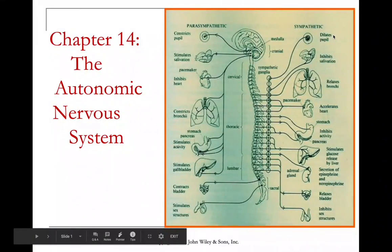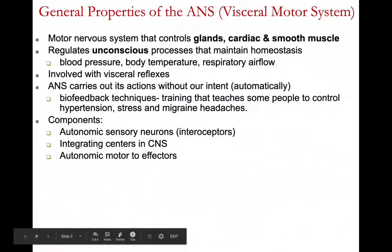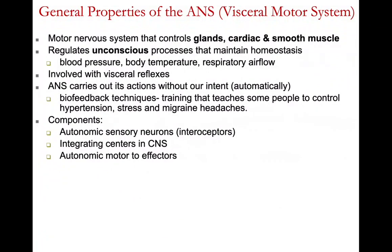Today we're going to look at the autonomic nervous system — its general properties. It's sometimes referred to as the visceral motor system because it controls the glands, cardiac muscle, and smooth muscle. It regulates unconscious processes to maintain homeostasis, such as blood pressure, body temperature, and respiratory airflow. It is involved with visceral reflexes and carries out its actions without our intent — it happens automatically.